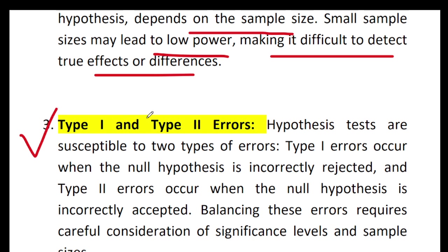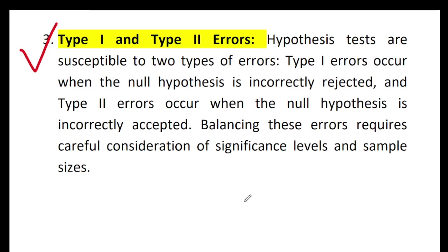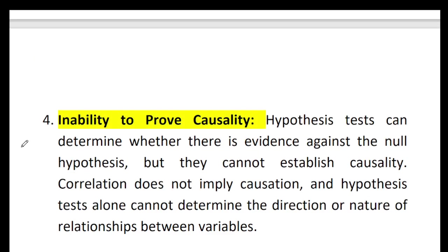The next limitation is type one and type two errors. Hypothesis tests are susceptible to two types of errors. A type one error occurs when the null hypothesis is incorrectly rejected, and a type two error occurs when the null hypothesis is incorrectly accepted. Balancing these errors requires careful consideration of significance level and sample sizes.